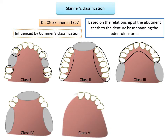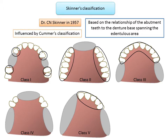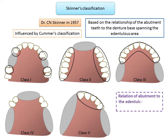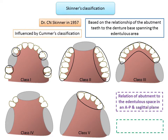Lastly, Class 5: the abutment teeth are unilateral in relation to the denture base; these may be unilateral or bilateral, meaning all teeth are present only on one side of the arch. The merits of Skinner's classification are that it defines the relationship of the abutment teeth to the edentulous space in an anterior-posterior and sagittal plane, providing an idea about available support. The demerit is that the quadrant is not defined and there is no representation of the exact number or type of teeth missing in the edentulous space.